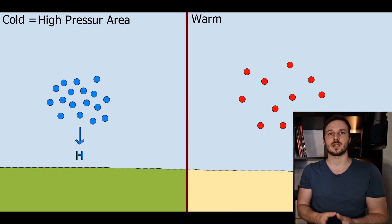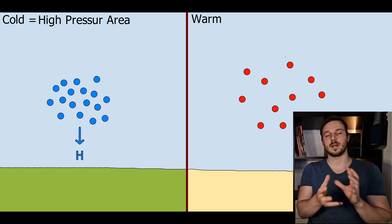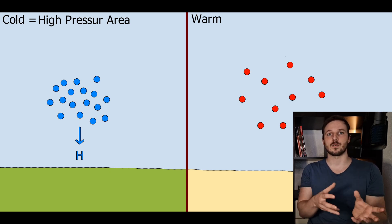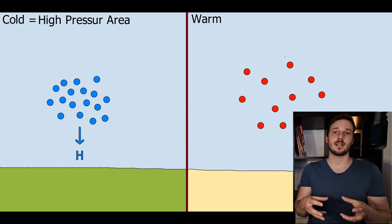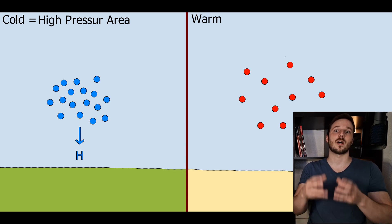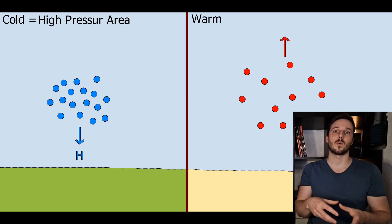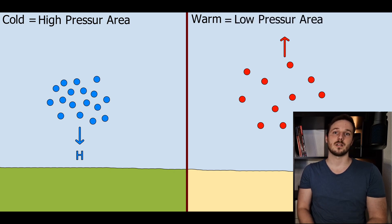Within a warm environment the air is not dense — it is warm and needs a lot of space — and therefore it's less dense than cold air and it rises away from the center of gravity, which is called a low pressure area and is shown with an L.